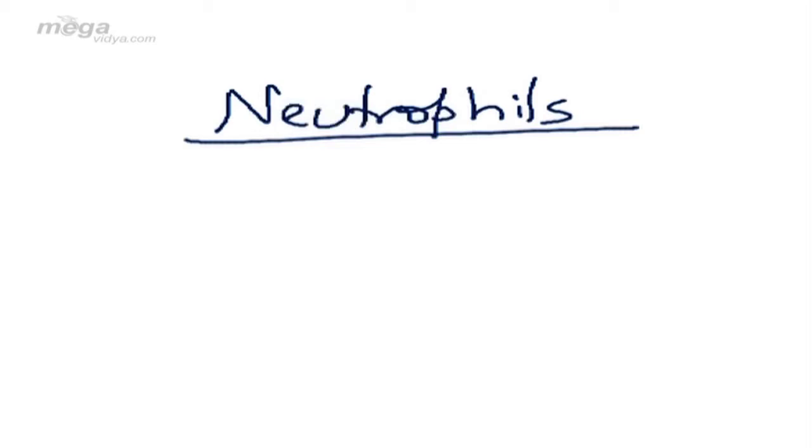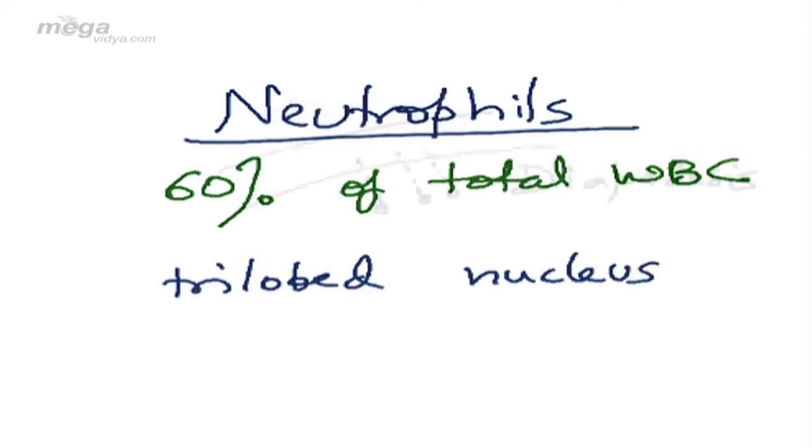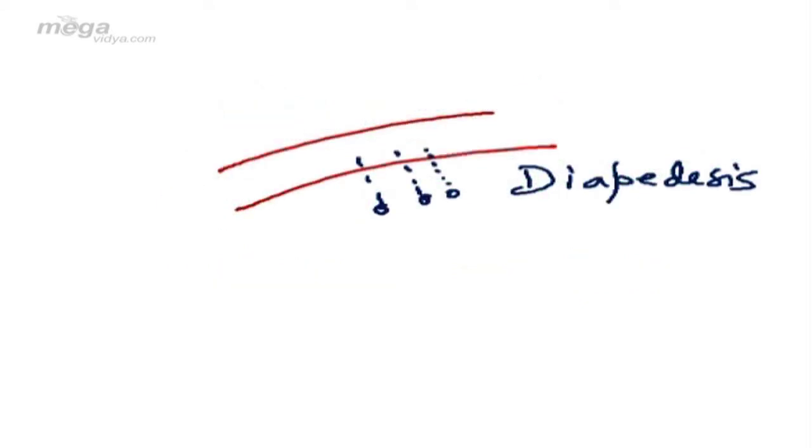The third type of granulocytes are neutrophils. Maximum in number, smallest in size. They constitute 60% of total WBCs. They have a trilobed nucleus. These neutrophils squeeze out of the blood vessels. This process is called diapedesis. Very frequently asked question in the entrance exam.